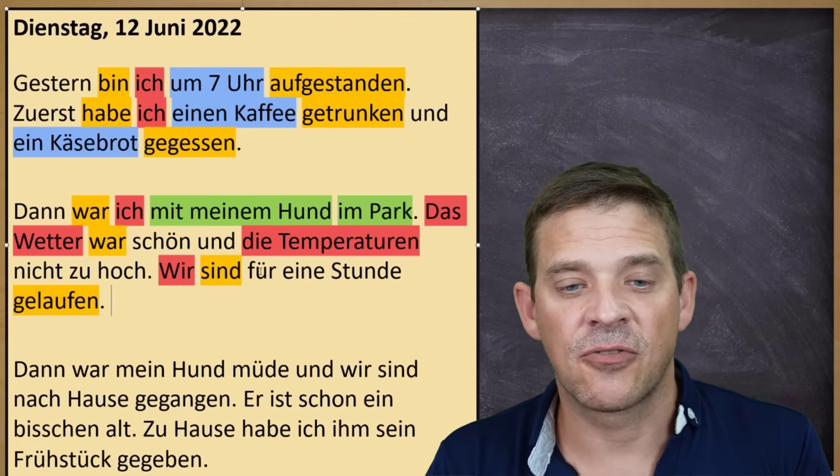Ich habe Brot, Nudeln, Tomaten und ein Stück Fleisch gekauft. Subjekt ist ich, habe gekauft ist das Verb — gekauft is das Partizip. Kaufen plus Akkusativ — so everything I bought: Brot, Nudeln, Tomaten und ein Stück Fleisch is all in Akkusativ case. Here the und doesn't divide two sentences — it's an enumeration. So before the last item you use und, and the whole list is in Akkusativ.